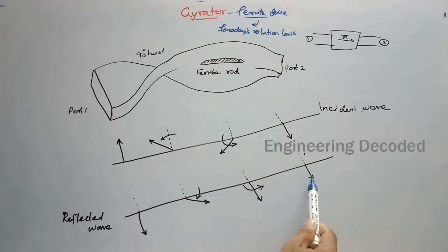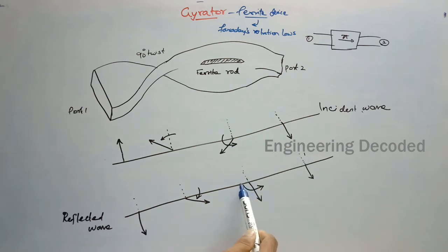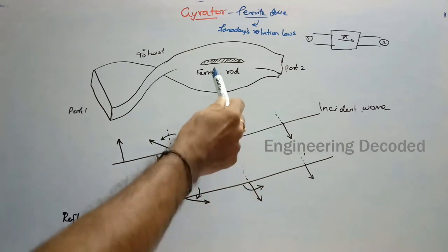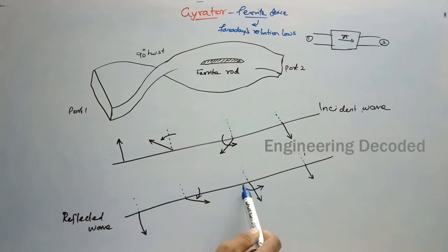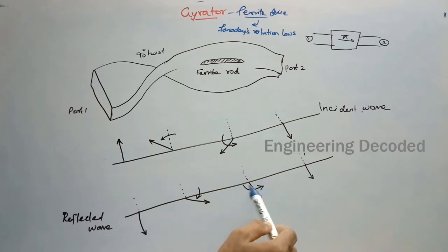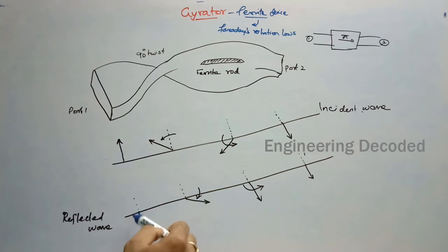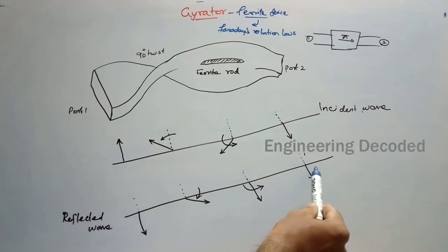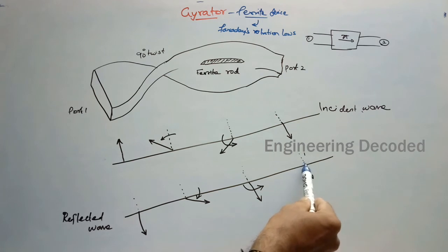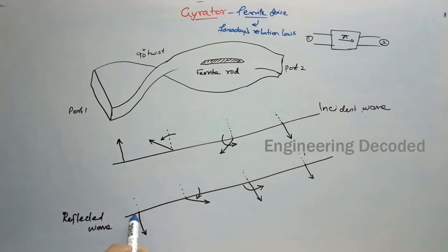So it will be as the original. Here it started as a downward signal — a signal flowing in the downward direction. This ferrite rod tries to make this signal flow in the opposite direction, but this 90 degree twist has twisted it again to its original position. So what is sent at port 2 will be received at port 1 without any shift.